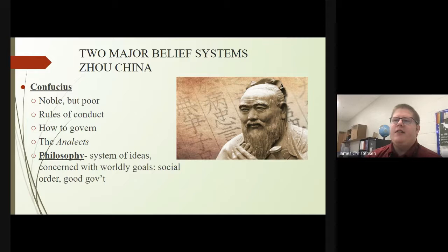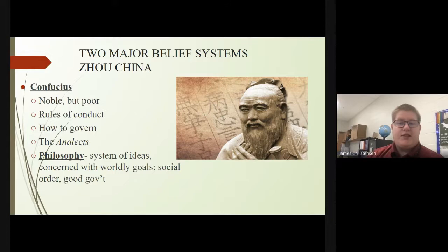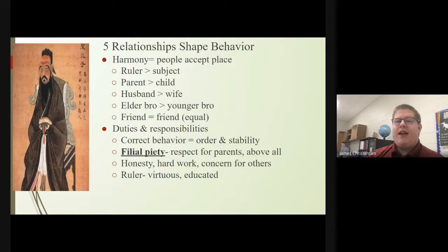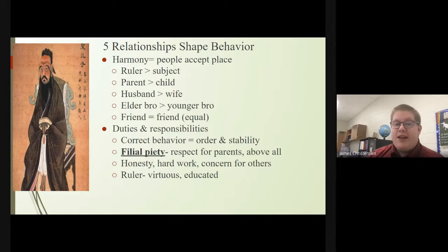There are two major belief systems in Zhou China. The first is Confucianism, under Confucius, who was a noble but poor. He established rules of conduct and how to govern, and wrote a book called The Analects. He established the idea of philosophy — a system of ideas concerned with worldly goals such as social order and good government. He believed that five relationships shaped behavior and harmony was achieved when people accepted their place: the ruler was greater than the subject, the parent greater than the child, the husband greater than the wife, the elder brother greater than the younger brother, and friends were equal. They shared duties and responsibilities, and correct behavior would equal order and stability for the region.